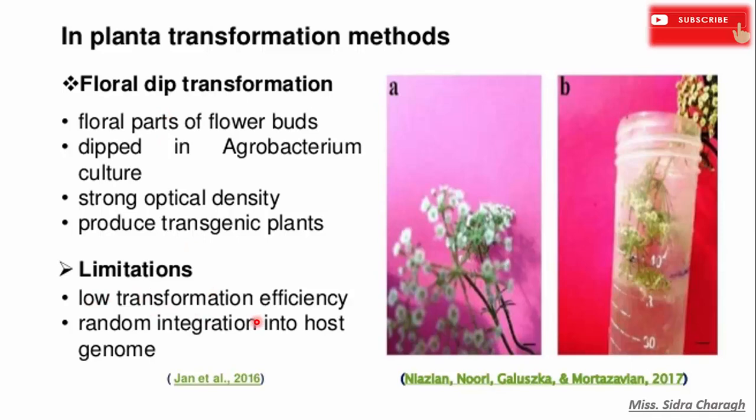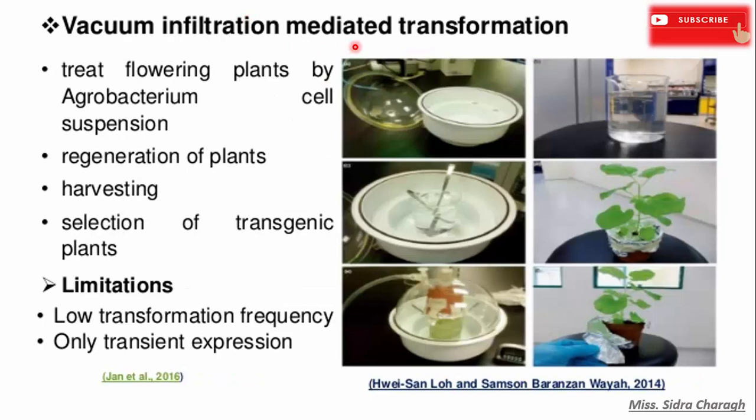Another method is vacuum infiltration mediated transformation. In this method, plant tissues are submerged in a liquid suspension of Agrobacterium and subjected to decreased pressure. Vacuum infiltration is a common method for introducing bacteria to the interior of the plant. Its limitations include low transformation efficiency and only transient expression.